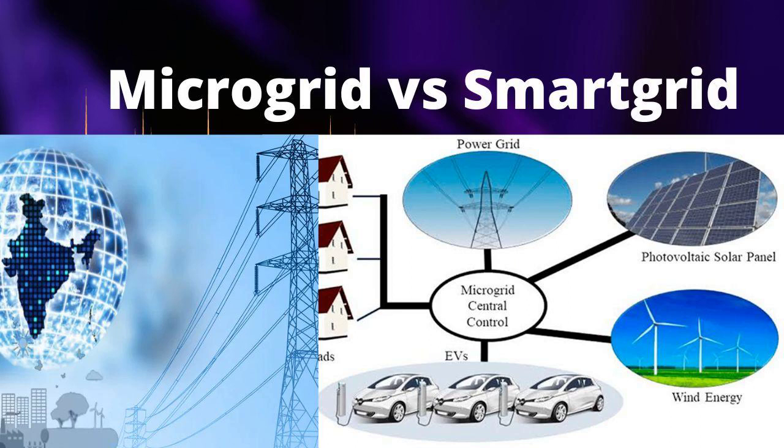Purpose. Microgrid: microgrids are typically used to increase energy resilience and reliability in specific areas. They are often deployed for critical infrastructure, remote locations, or to integrate renewable energy sources at a smaller scale. Smart Grid: the smart grid is designed to improve the overall efficiency and sustainability of the electricity distribution system. It enhances grid management, reduces losses, and supports the integration of renewable energy sources while accommodating electric vehicles and other emerging technologies.